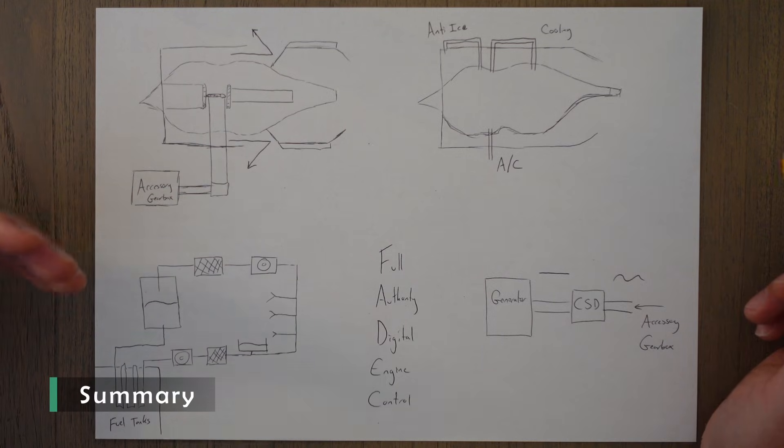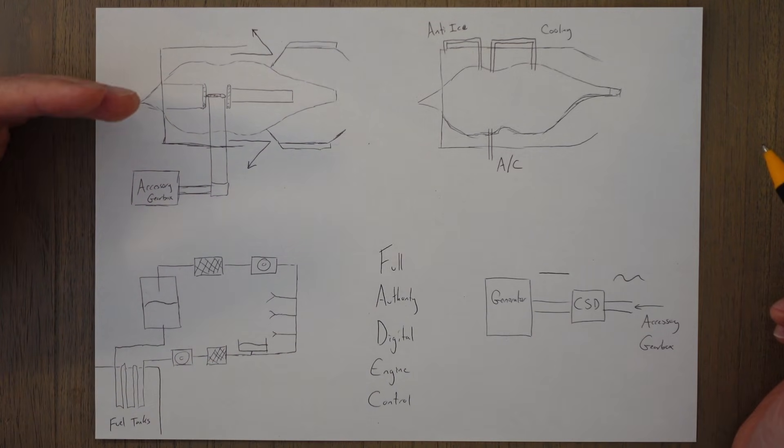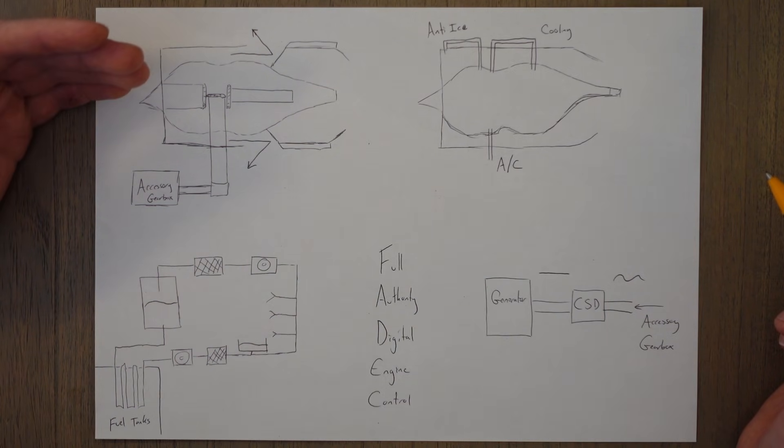To summarize then, reverse thrust is a system that redirects the flow of the exhaust gases by about 120 degrees to achieve about 40% the value of maximum forward thrust, and it's active on the ground only, therefore making it useful for landing and rejecting takeoffs.